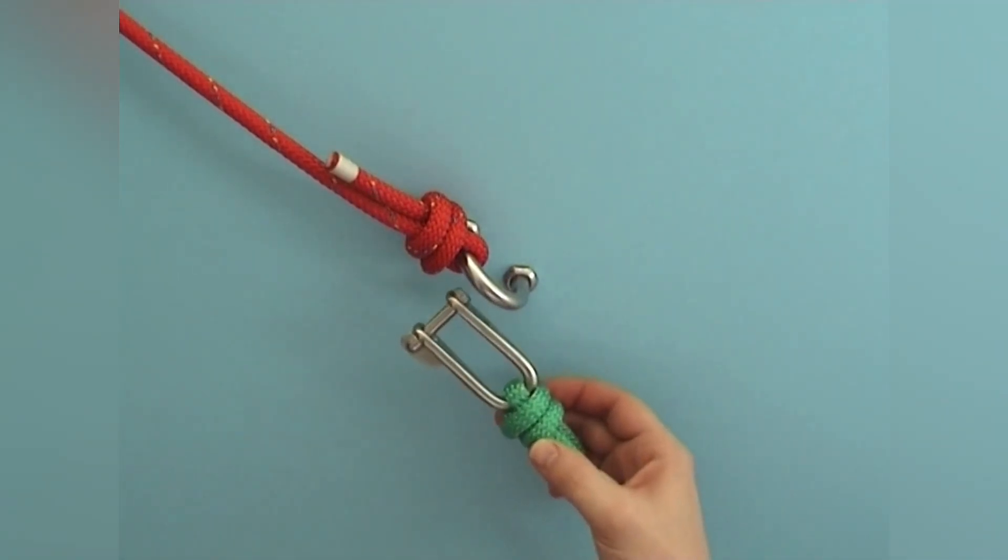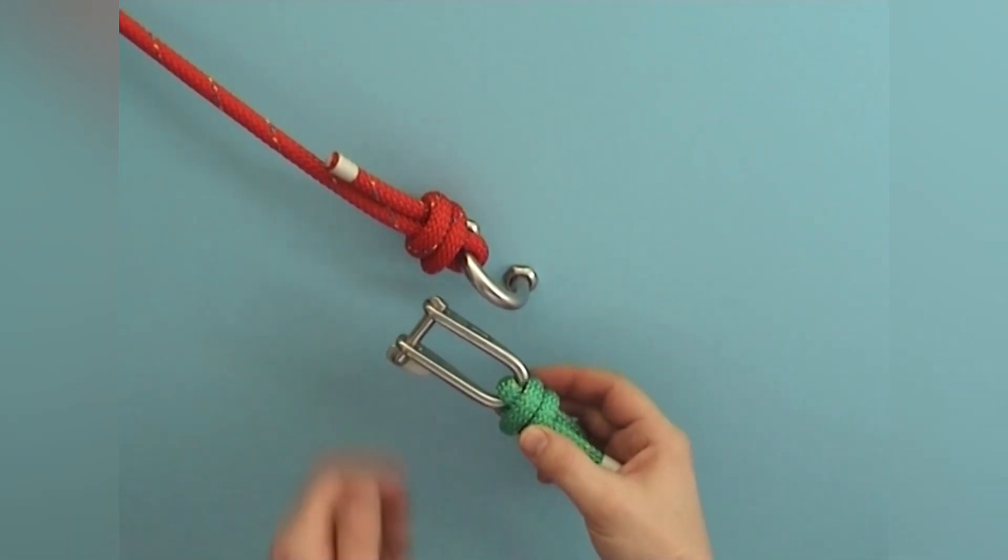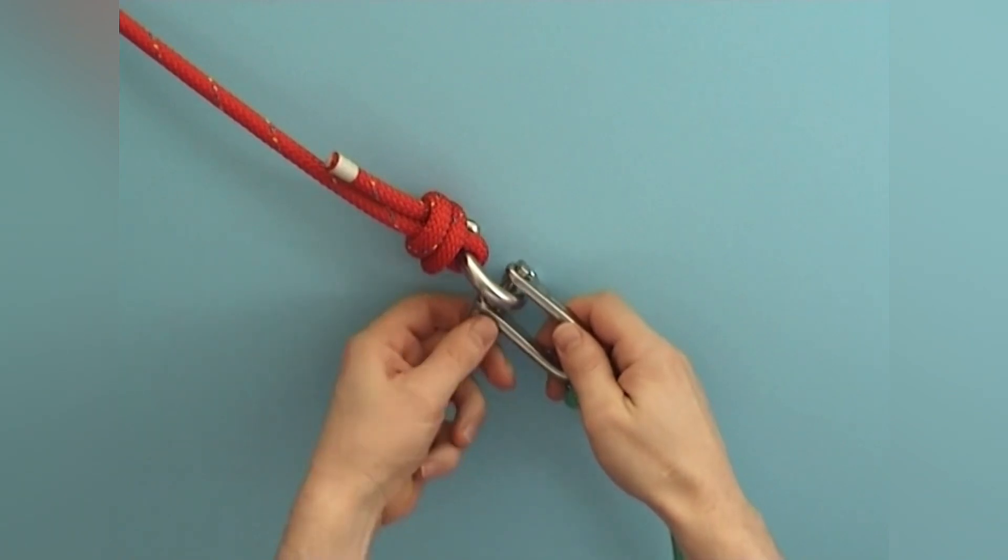The scaffold knot is ideal for shackles and carabiners as it fixes them rigidly on the rope. That way they can be handled better and faster.